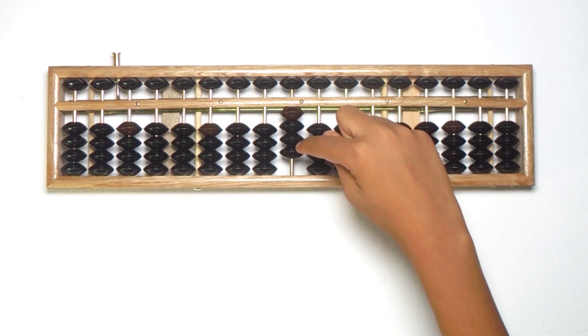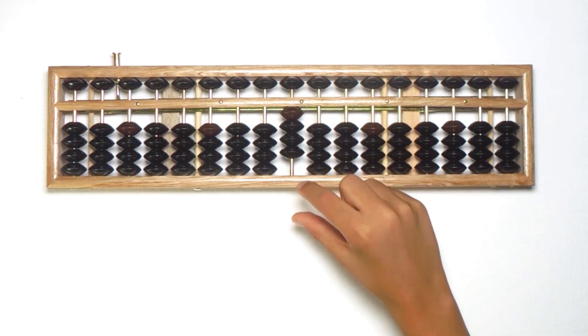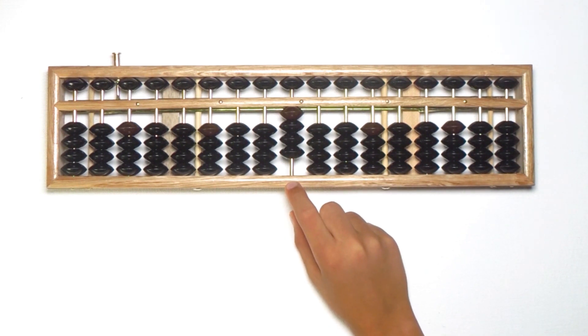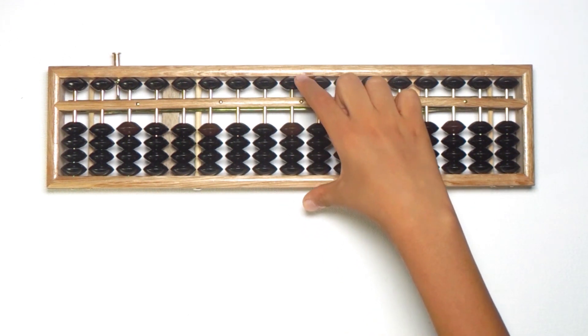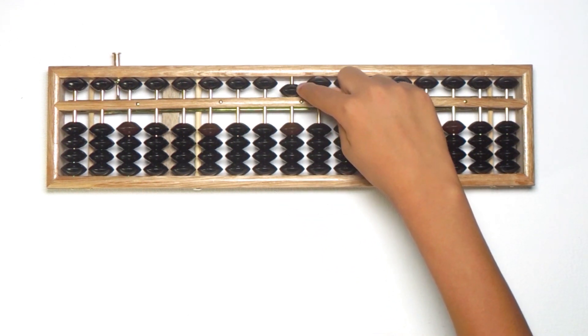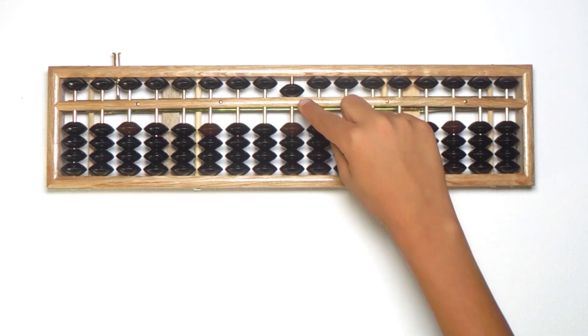And we have counted up to four. Now what can we do to count five? Heavenly bead has the value of five. So let me first clear the Abacus and bring heavenly bead down to count five. This is the number five.